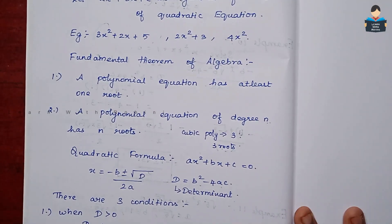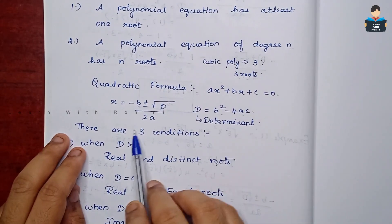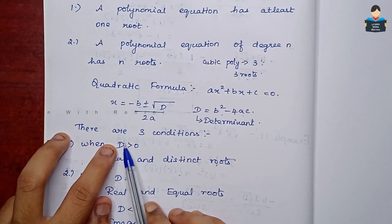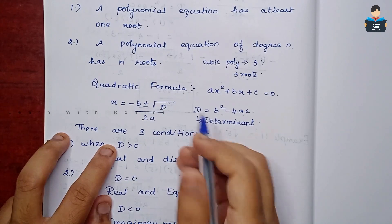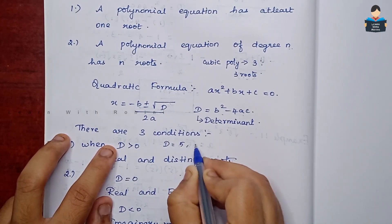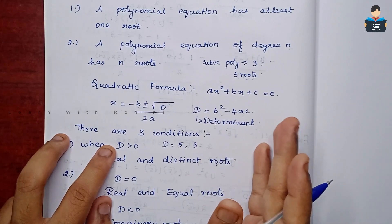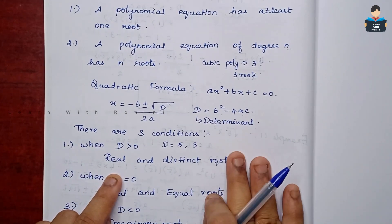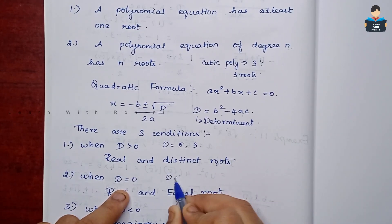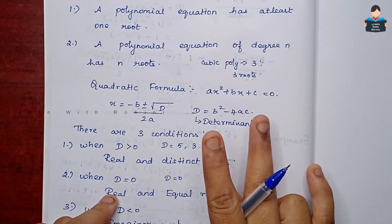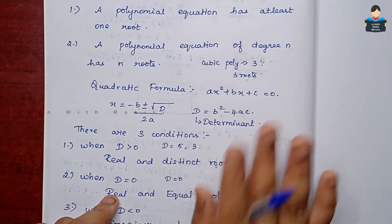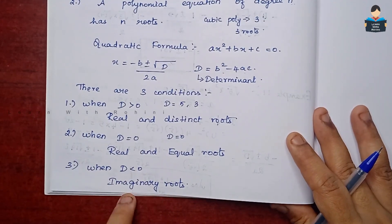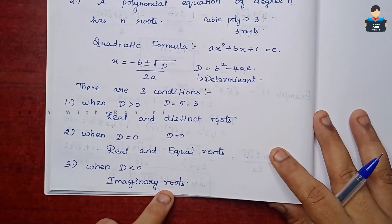For the discriminant D, there are three conditions. If D is greater than 0 — for example D equals 5 or 3 — we have real and distinct roots. If D is equal to 0, we have two equal roots. If D is negative, we get imaginary roots.